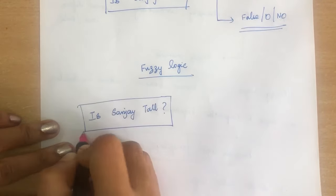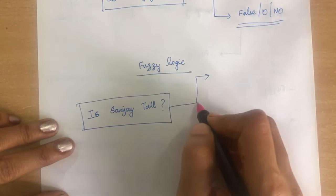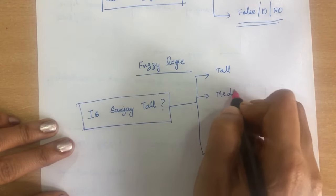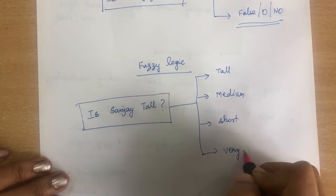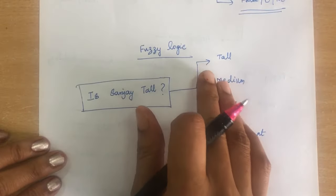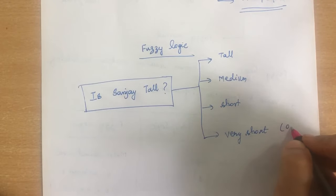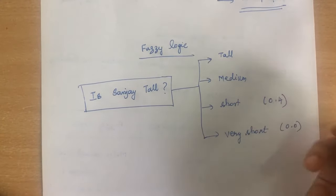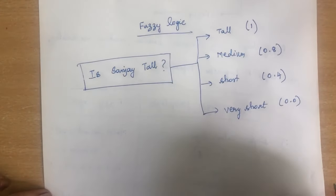Now ask the same question to another person: 'Is Sanjay tall?' They cannot give a single correct answer. They may say he is tall, medium, short, or very short. We classify into four types: tall, medium, short, and very short. Short is represented by 0.0, short by 0.4, medium by 0.8, and tall by 1.